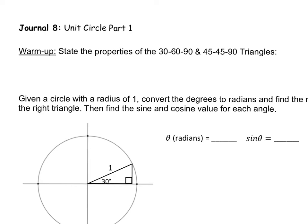In this video, I'm going to be teaching you how a unit circle is built from scratch. But before we can understand how that's built, we need to understand the properties of a 30-60-90 triangle and a 45-90 triangle.